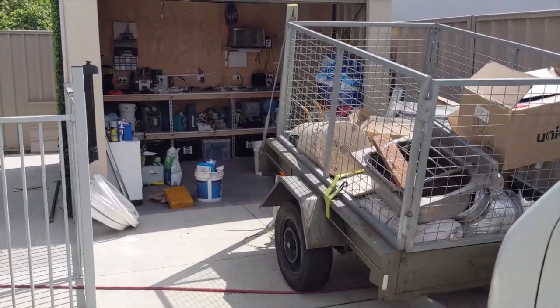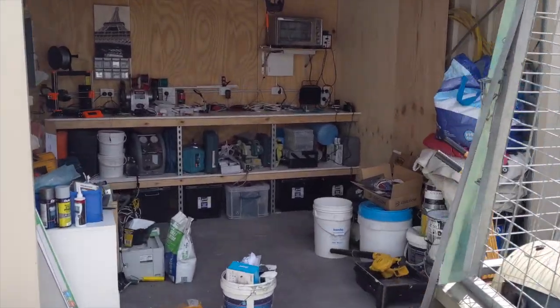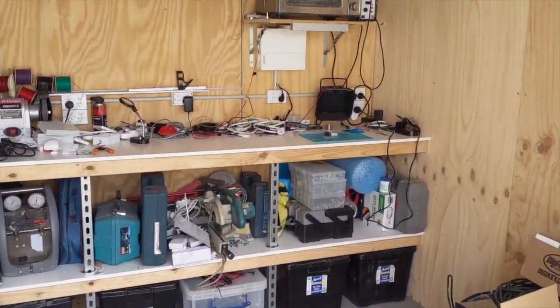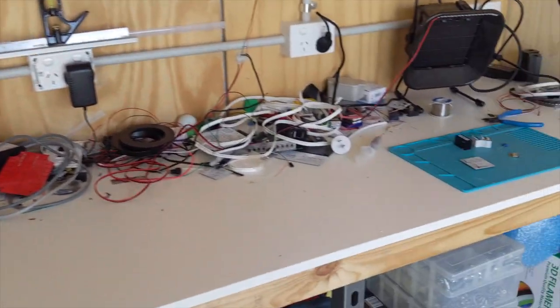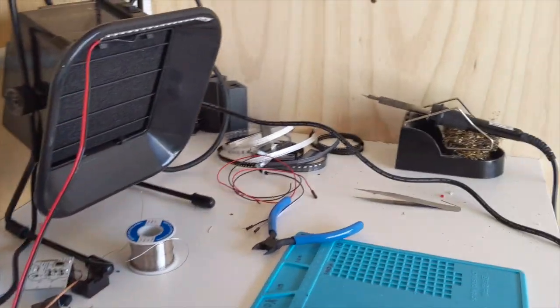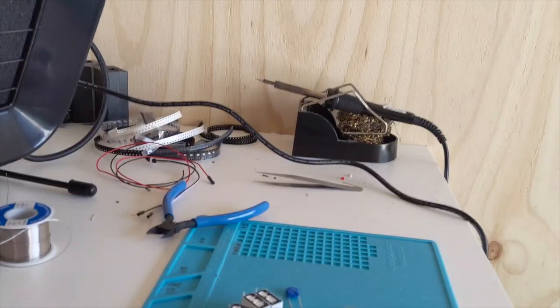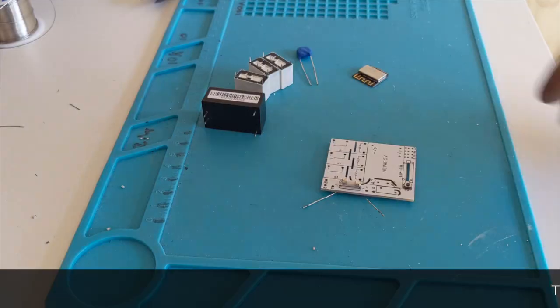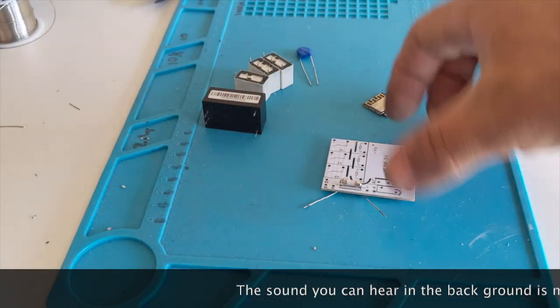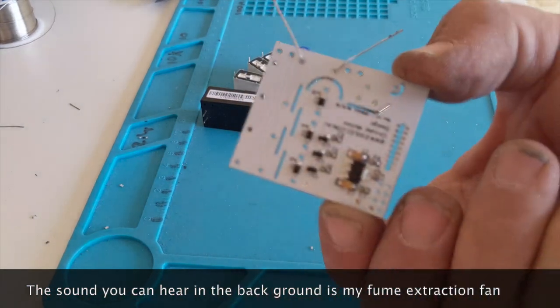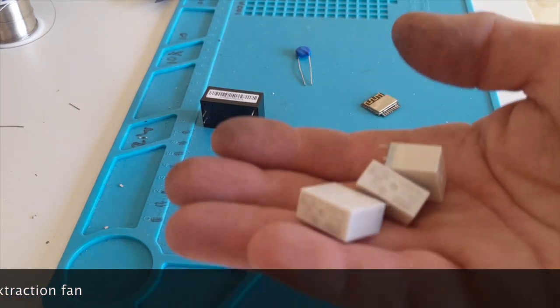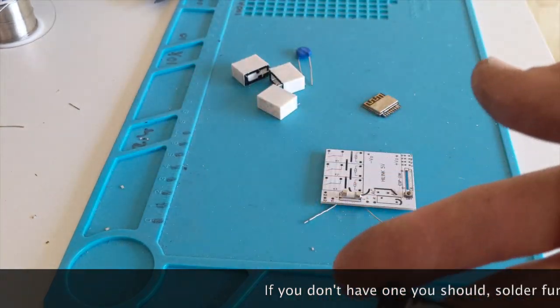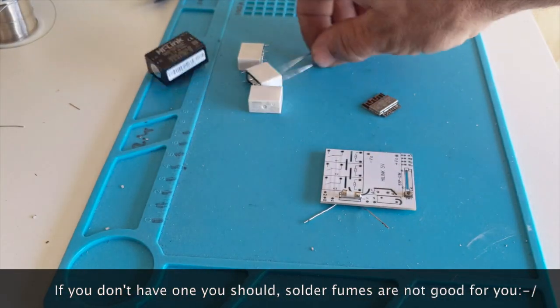Okay so now we're going to solder that together and this is my extremely busy workbench. So we've got our ESP module, we've got our circuit board pre-soldered on the back, three Omron relays that we're going to be using, single pole single throw, and we've got our 5 volt power supply and an MOV.